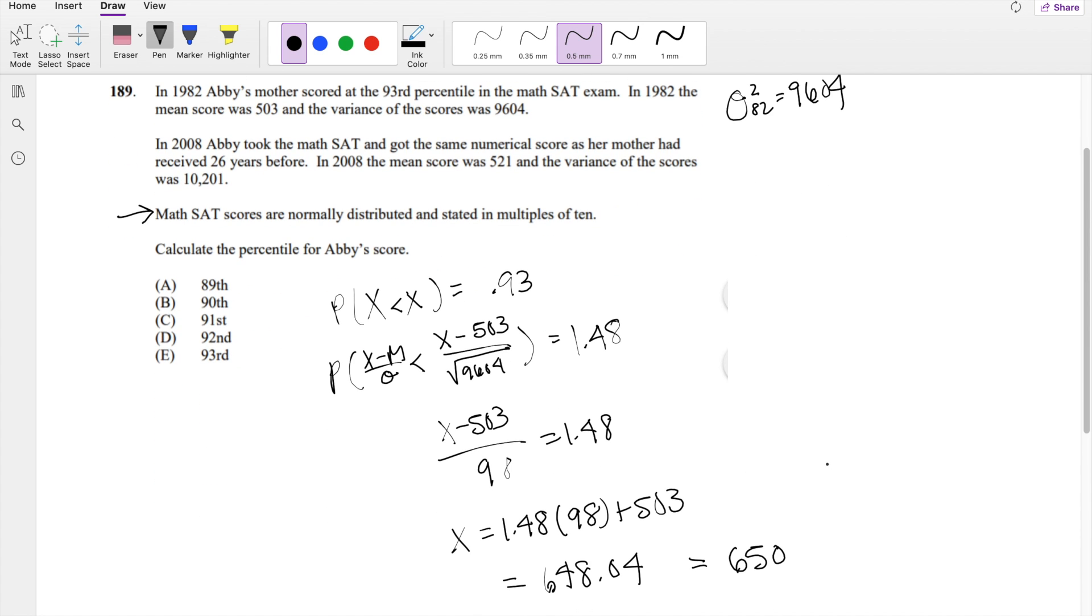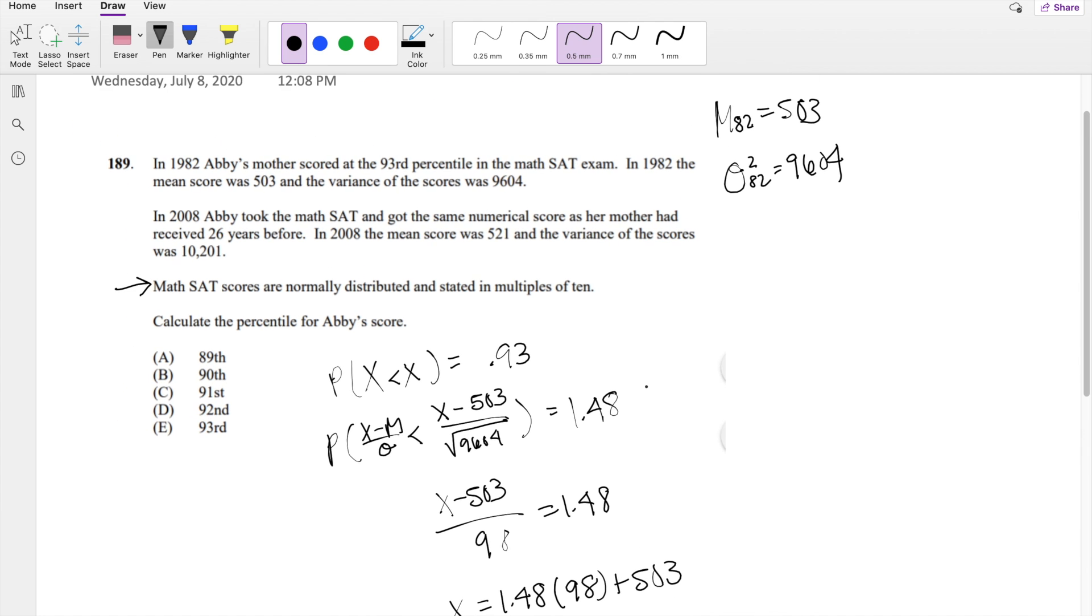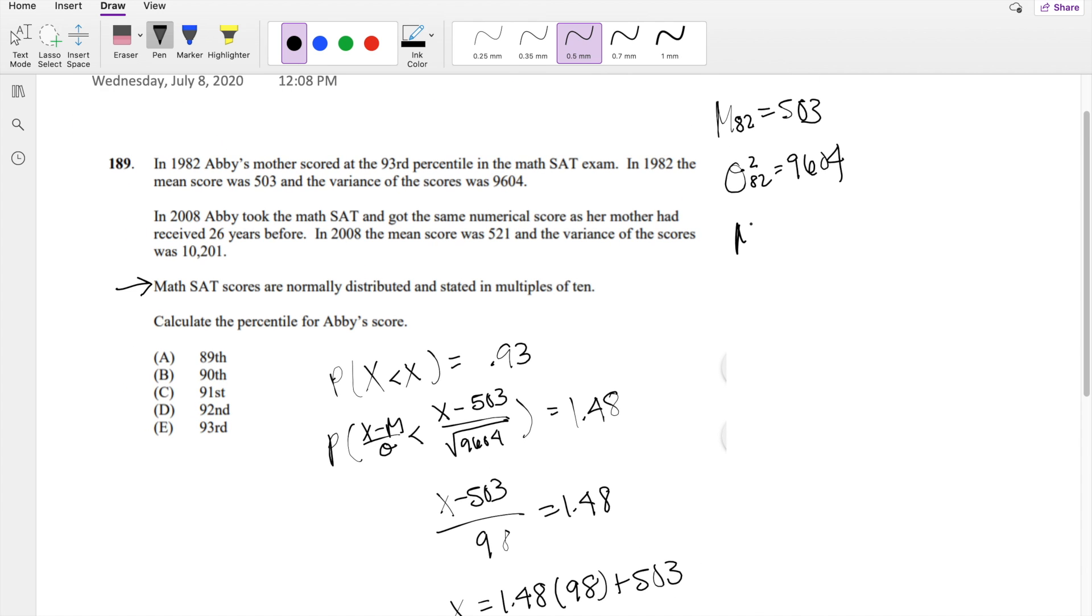And now we want to try to see what Abby scored. If Abby got the same score, if Abby got 650, what would her percentile be in today's terms? So in today's terms, the mean of 2008 is equal to 521. And standard deviation, or they give you the variance, of 08 is equal to 10,201.